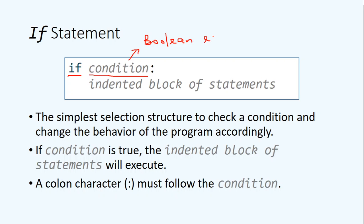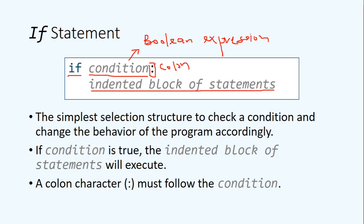This Boolean expression will evaluate to either true or false. Only if this Boolean expression is true will it execute what we call the indented block of statements. Looking at the syntax again: we have the if keyword followed by a space and a condition, which is a Boolean expression, and that is followed by a colon character. This colon is a must — you must have this colon character before you jump into the indented block of statements.